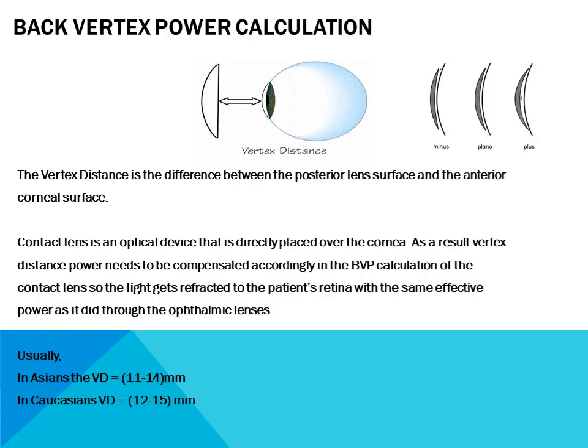Now, back vertex power calculation of contact lens. The back vertex power is essentially the effective power of the optical device — whether spectacle lens or contact lens — which helps in the transmission and refraction of light through that device so that light gets focused well on the retina and gives a proper perception of the image. We have seen that after a particular range of power, the contact lens power differs from that of the spectacle power, and that is what we are going to discuss here.